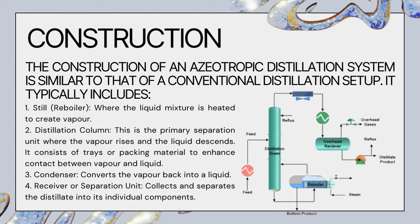The construction of azeotropic distillation includes four main components. The first is the still or reboiler, where the liquid mixture is initially heated to create vapor. The heat input causes the more volatile component of the mixture to vaporize, and the reboiler initiates the separation process. The second component is the distillation column, which is the heart of the system and is responsible for the actual separation of components via a packed column or tray column.